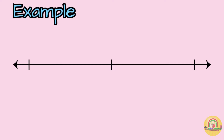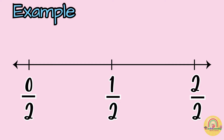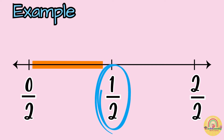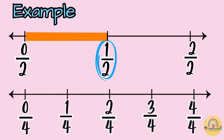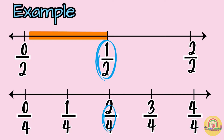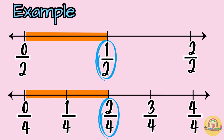Let's see another example. This number line has two equal spaces, so the denominator must be two. Now we're going to find the fraction one-half. Let's locate the fraction one-half. This is the distance that one-half shows on the number line. Now we're going to look at another number line and find a fraction that shows the same distance. That fraction is two-fourths. As you can see, these two fractions show the same distance on the number line, so one-half and two-fourths are equivalent fractions.